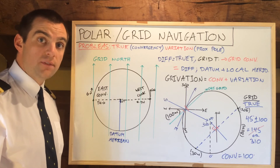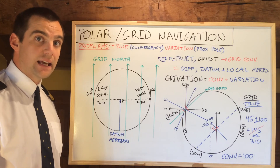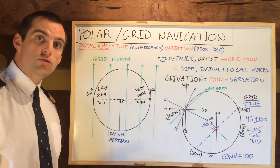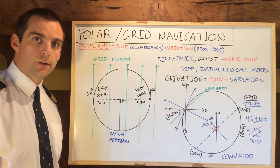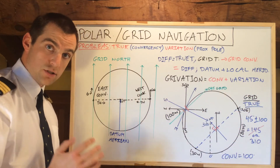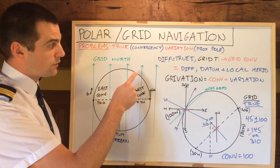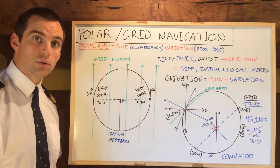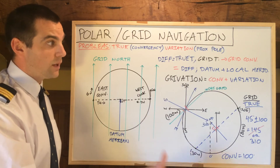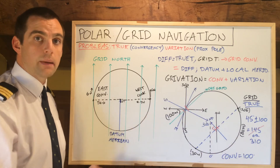These exercises have been about converting between grid and true. However, if we want a magnetic heading, we also need to take into account the variation. Grivation is equal to the convergency plus the variation, and it's just one mathematical number. This allows us to go from grid north straight to magnetic north. With just a conversion angle, we would only be able to get to true heading, and then apply the magnetic variation at that point to get the magnetic heading.